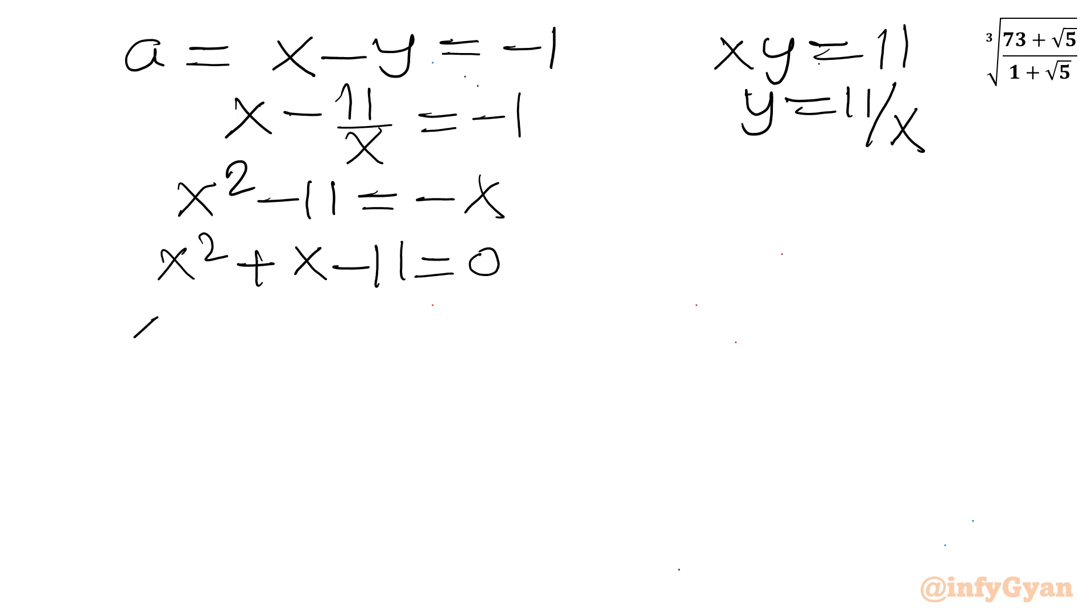Let's apply quadratic formula. x will be equal to minus b, minus 1, plus minus square root of b square, so 1 square is 1, minus 4ac, so plus 44, divided by 2a, so 2. So x will be equal to minus 1 plus minus square root 45 divided by 2.